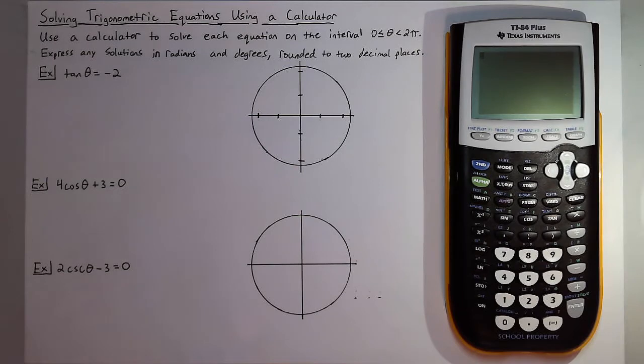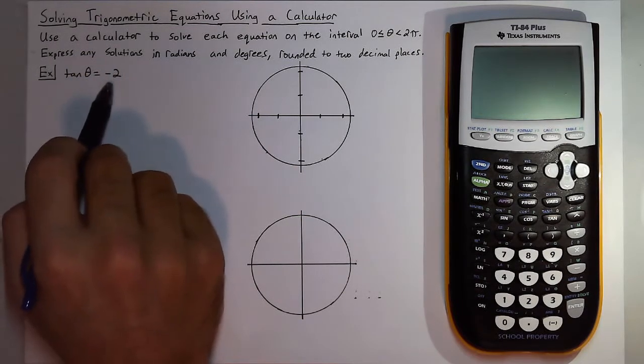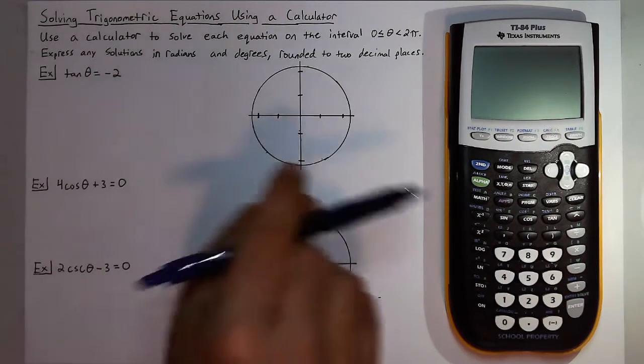So first I'm going to solve tangent of theta is equal to negative two. Now there's no easy unit circle angle that will solve this so we need to resort to a calculator.